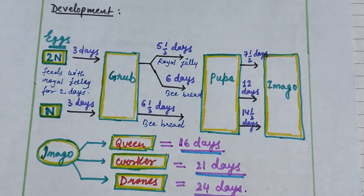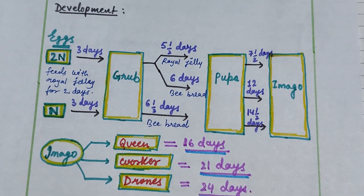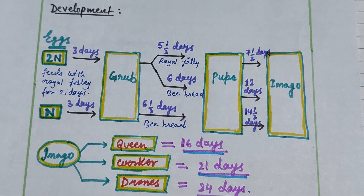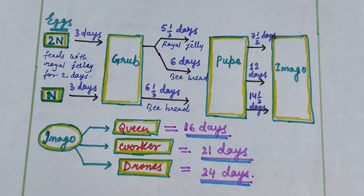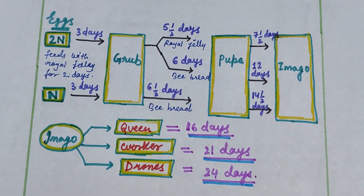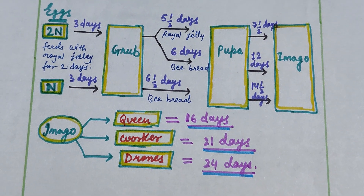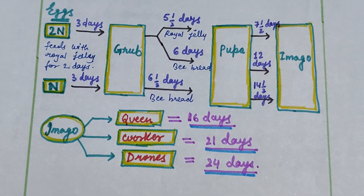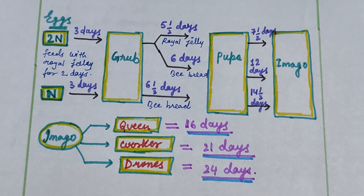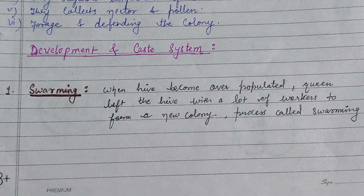After five and a half days the pupa is formed. Larvae are fed royal jelly to form a queen, while bee bread is given to workers and drones. The development period is 16 days for the queen, 21 days for the worker, and 24 days for the drone.